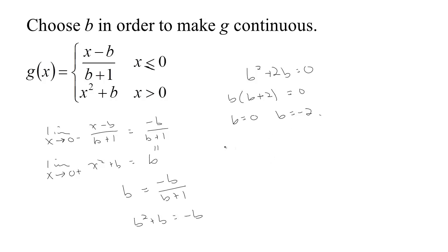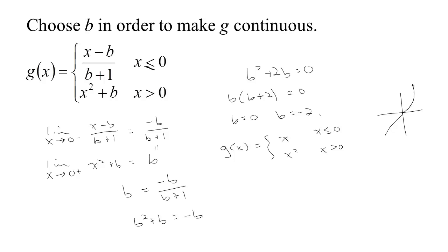Factoring gives us b equals 0 or b equals negative 2, so there are two choices. With b equals 0, we'd have x minus 0 over 0 plus 1, which simplifies to x. So we'd be using x if x is less than or equal to 0, and x squared if x is greater than 0. That makes sense because the line y equals x comes up to 0, then at 0 we switch to the parabola x squared, and it's continuous everywhere.